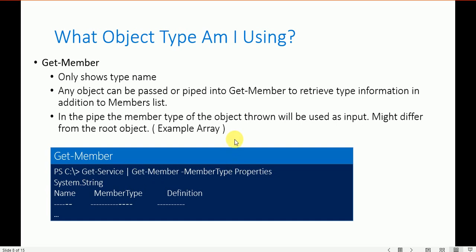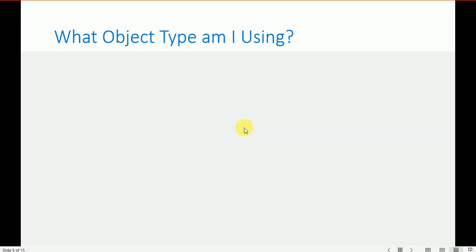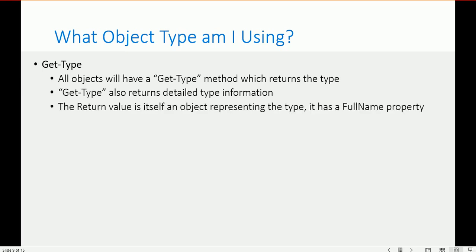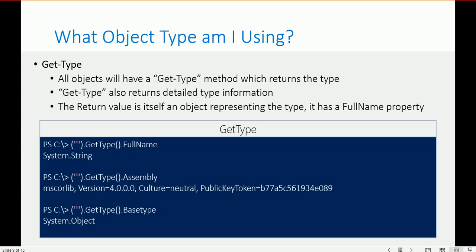Now let's understand Get-Type. Get-Type tells us what type of data we are using. All objects have a Get-Type method. Get-Type returns the type and also returns detailed type information — the return value is itself another object representing the type. It has a FullName property.